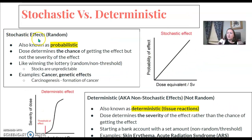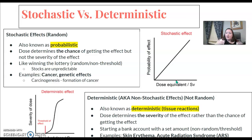Some terms to remember: stochastic is random, also called probabilistic. The dose determines the chance of getting the effect, but not the severity. For example, if you're exposed to 100 CAT scans a year and I'm only exposed to one, your chances of getting cancer are higher — but because cancer is random, I could get cancer and you could not. It's saying you're more likely to get the result, not that you will. It's the chance of getting it, not the severity. It's like winning the lottery, or like stocks being unpredictable. Stochastic is linear and non-threshold.